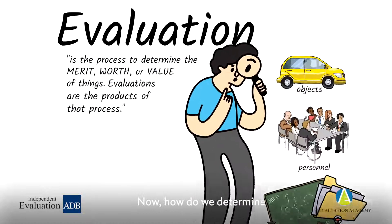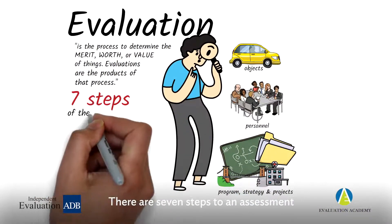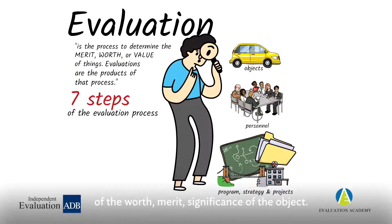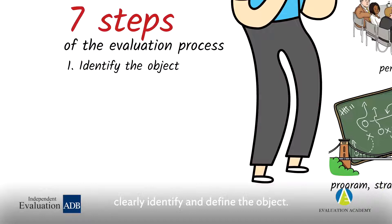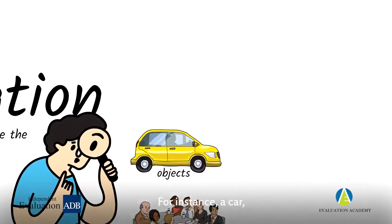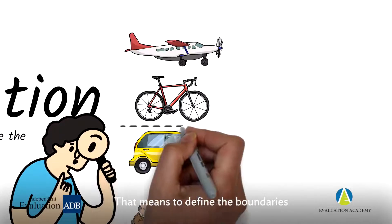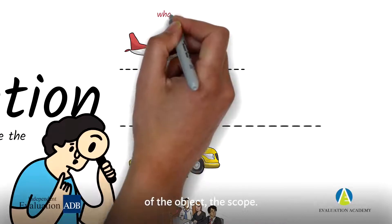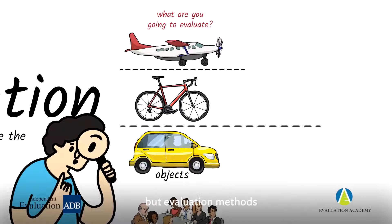Now, how do we determine that worth, merit and significance of the object of our evaluation? There are seven steps to an assessment of the worth, merit, and significance of the object. The first step is to clearly identify and define the object — for instance, a car, a bicycle, and an airplane. That means to define the boundaries of the object, the scope. The three of them are dedicated to transportation, but evaluation methods will differ in each of these cases.